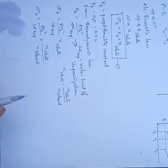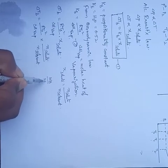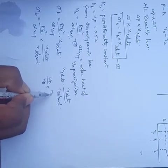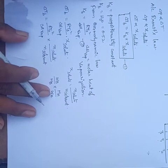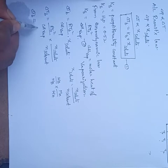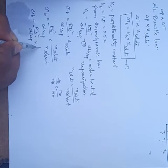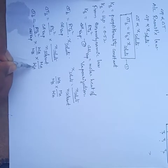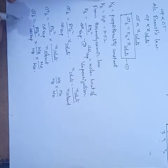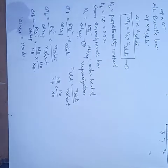Number of moles of solute equals weight of solute (Wb) divided by gram molecular weight of solute (Mb), times molecular weight of solvent (Ma) divided by weight of solvent (Wa). Also, change in enthalpy of vaporization equals Mb times Lb, where Lb is the latent heat of vaporization.